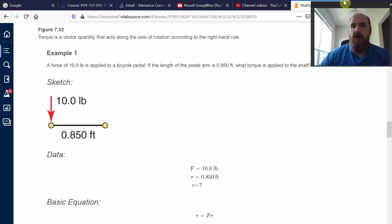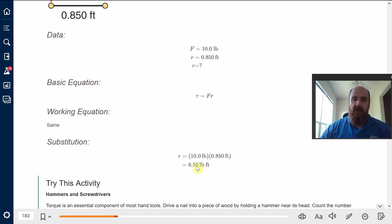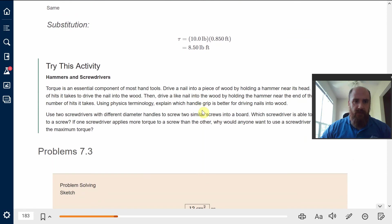For example, in this case, a force of 10 pounds is applied to the bicycle pedal that we saw above. The length of the pedal arm is 0.85 feet. What torque is applied? You just multiply 10 pounds by 0.85 feet. You get 8.5 pound-feet of torque.